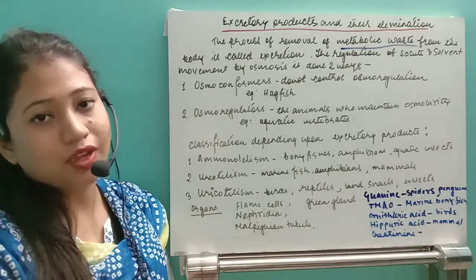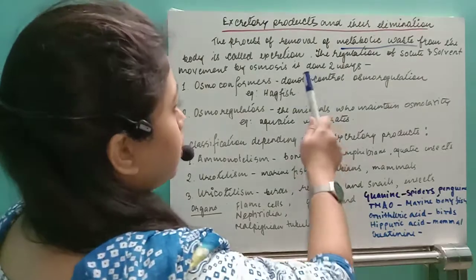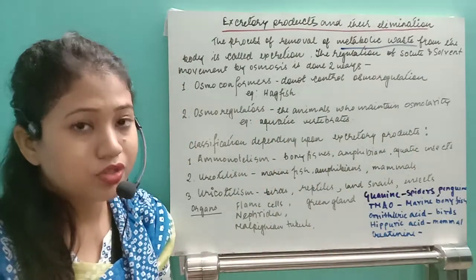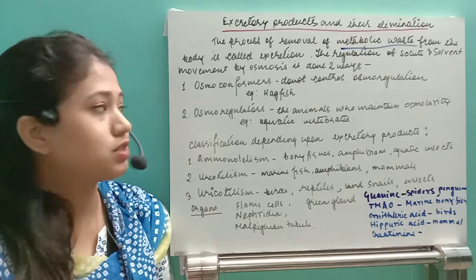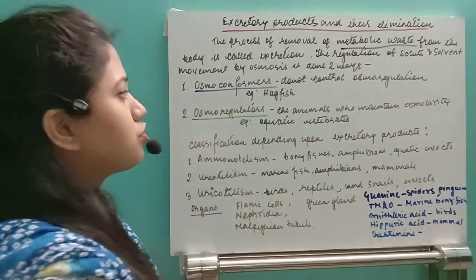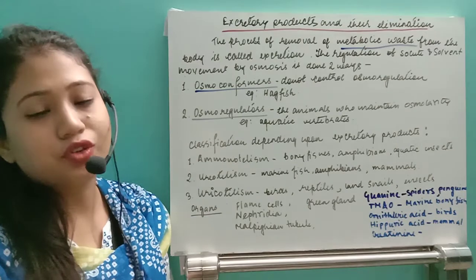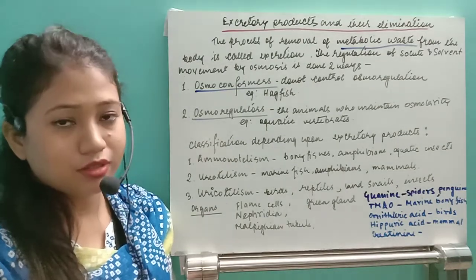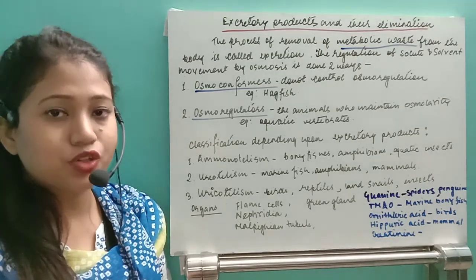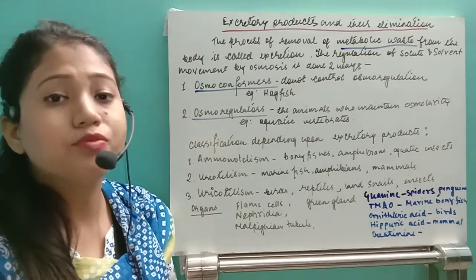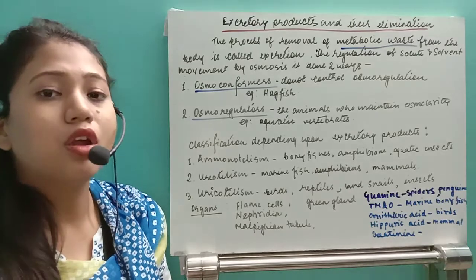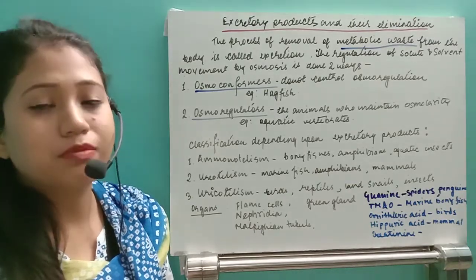The regulation of solutes and solvent movement by osmosis occurs in two different ways: osmoconformers and osmoregulators. By excretion, we maintain the salt and water balance as well as remove the nitrogenous waste product. So the excretory system performs two functions: first, removal of nitrogenous waste products such as urea, and second, maintaining the salt and water balance.